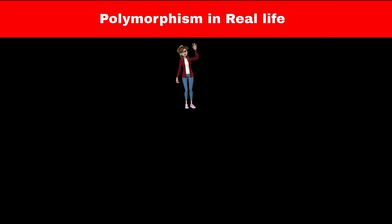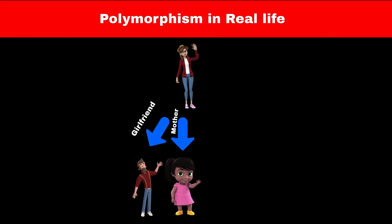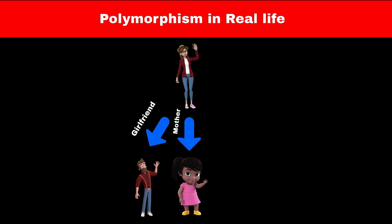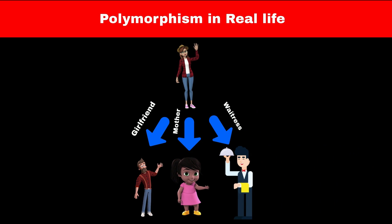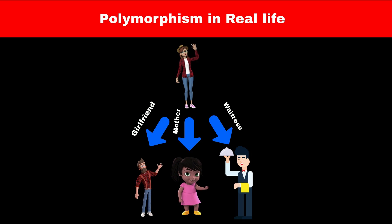Consider the example of Rachel. Rachel plays different roles in her life. Rachel is the girlfriend of Ross. She is also the mother of Emma, and she is also a worker at a restaurant. This means Rachel is a single person who is performing different roles - one person having multiple forms. This is called polymorphism in real life.